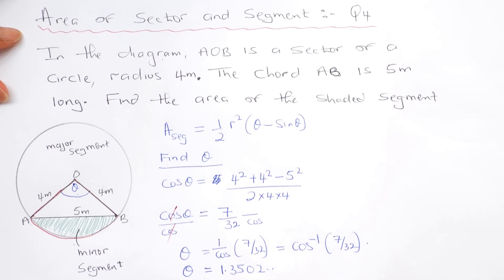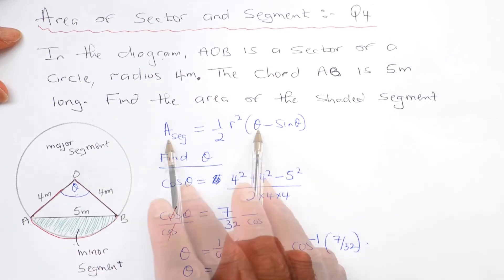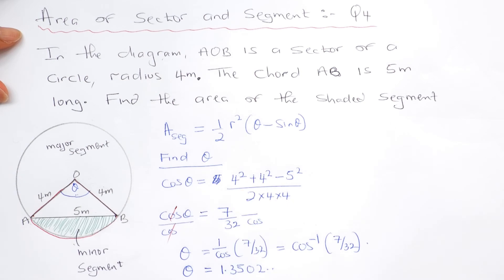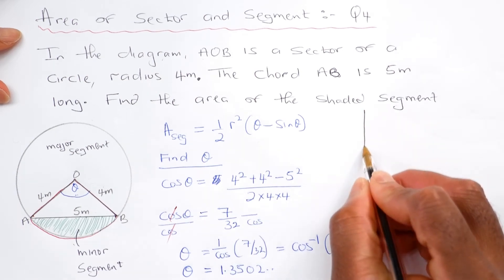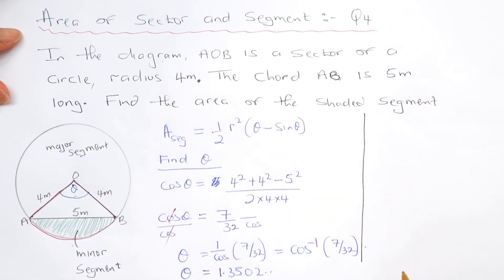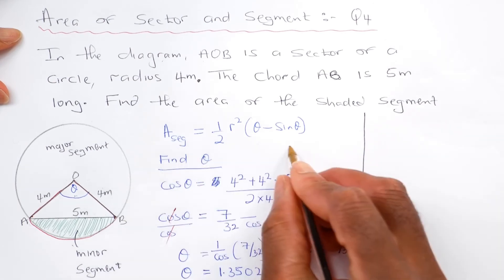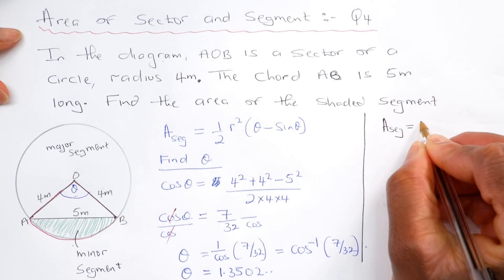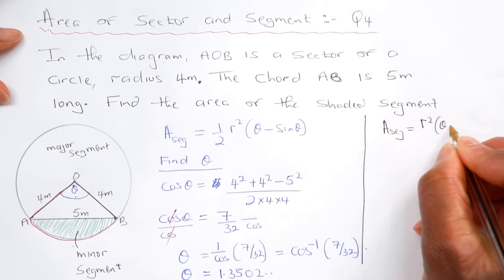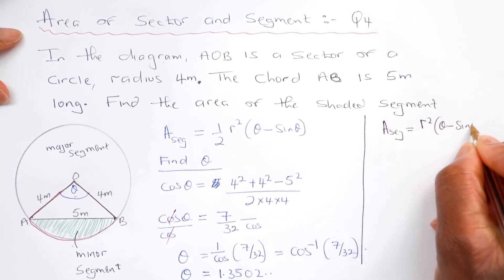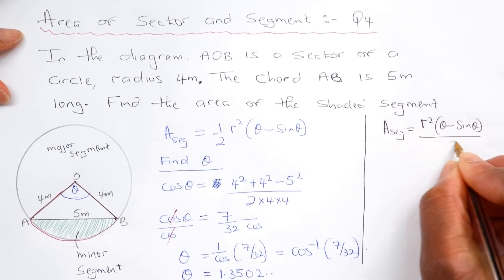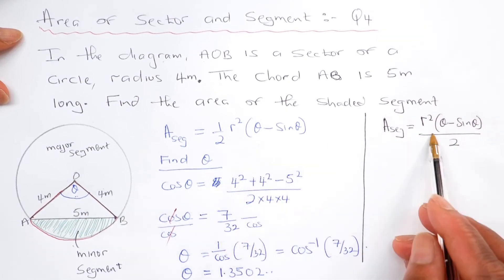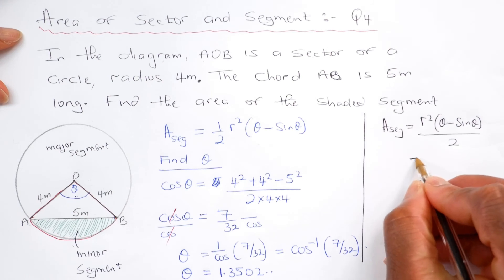Now that I know the angle theta, I can then use that to find the area of the segment. So now to find the area of the segment, which is that one, area of segment equal to r squared theta minus sine of theta divided by 2.